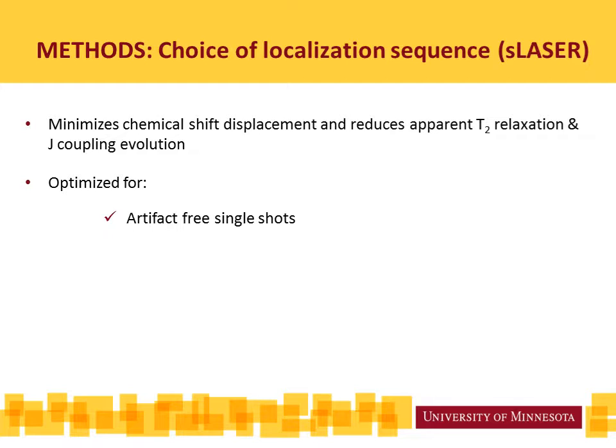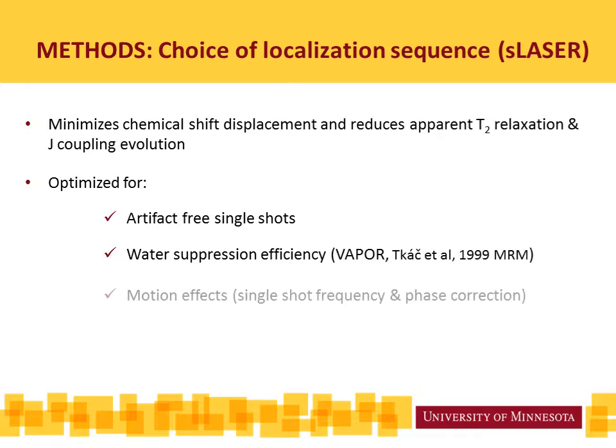In addition, the sequence was optimized for various factors. For example, it generates under most circumstances artifact-free single shots, so we do not have to rely on phase cycling for unwanted coherence removal. It uses the VAPOR water suppression method described by Tkac et al. in 1999 in MRM, so it has high water suppression efficiency. We routinely do single-shot frequency and phase correction, as has been standard in a number of research labs for various sequences.